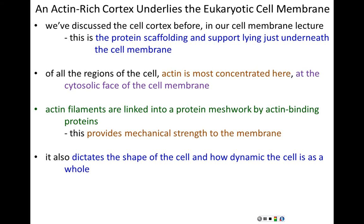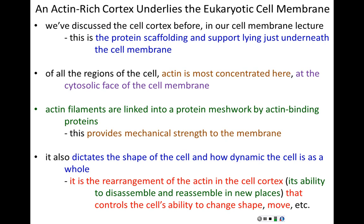The cell cortex, made up of actin filaments, dictates the shape of the cell and also dictates how much the cell can move. The more robust the cell cortex, the more static and non-moving the cell. The more flexible and dynamic the cell cortex, the more the cell can change its shape and move. Ultimately, it's the rearrangement of actin filaments in the cell cortex — the ability of actin to assemble and disassemble — that controls the cell's ability to change its shape.